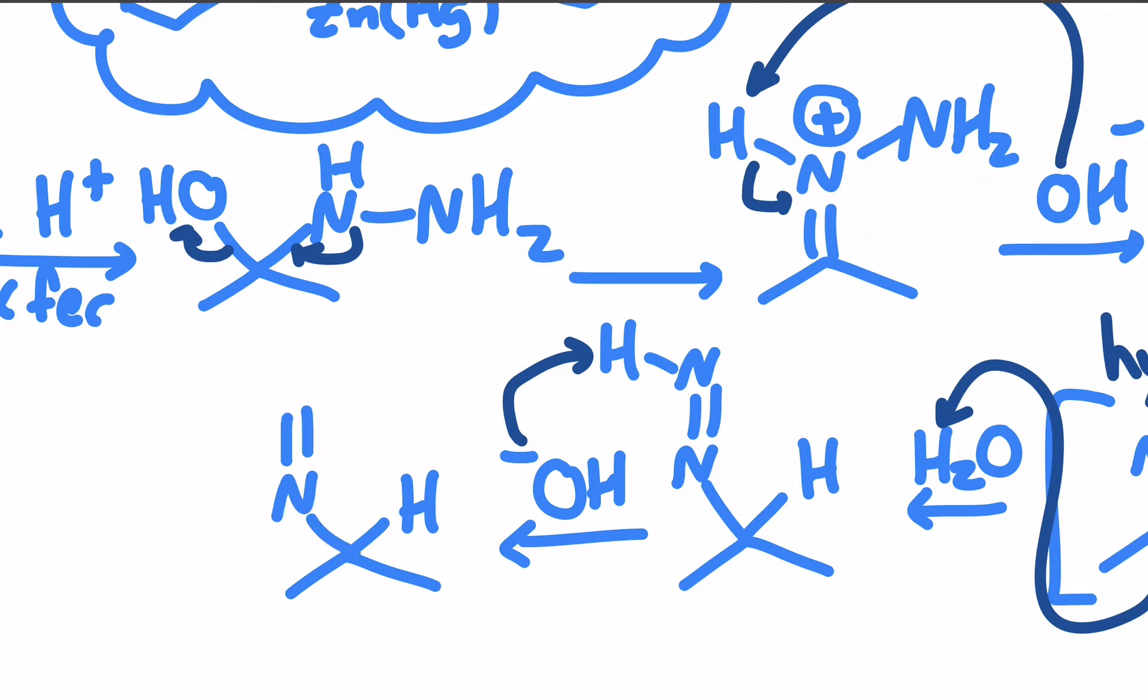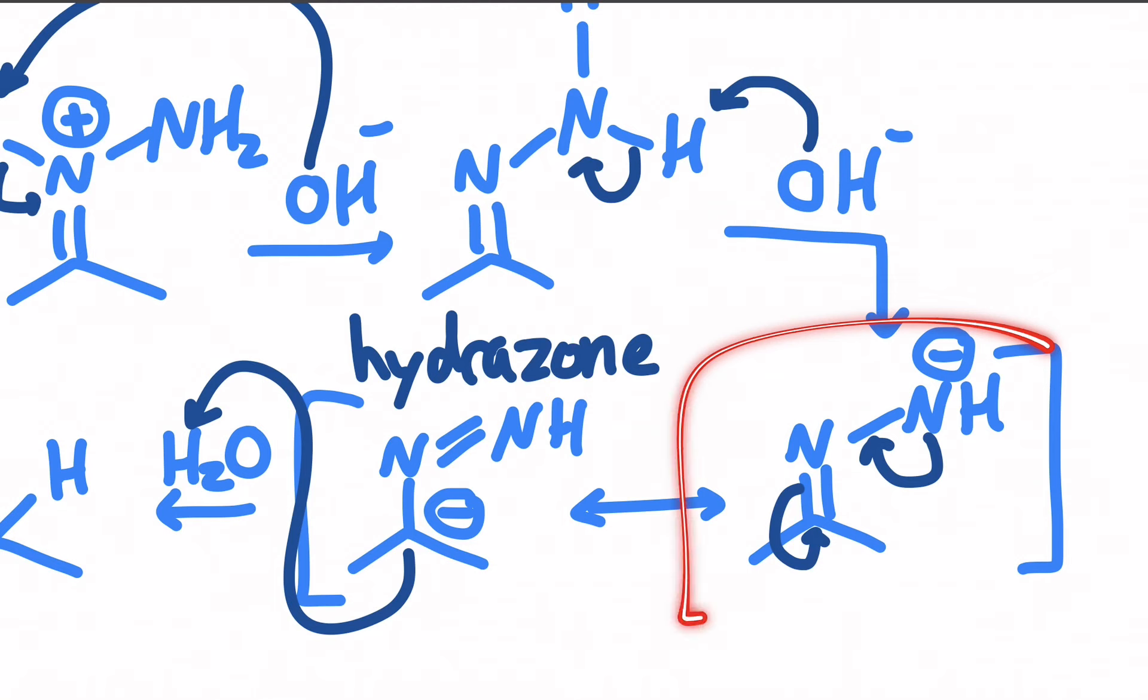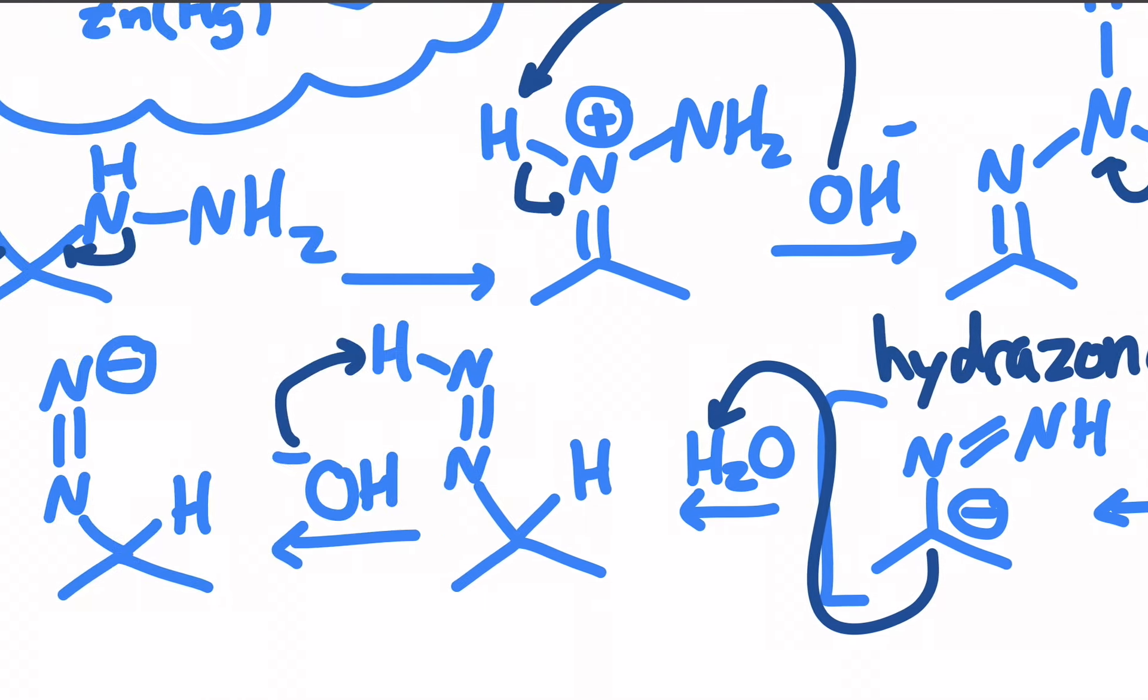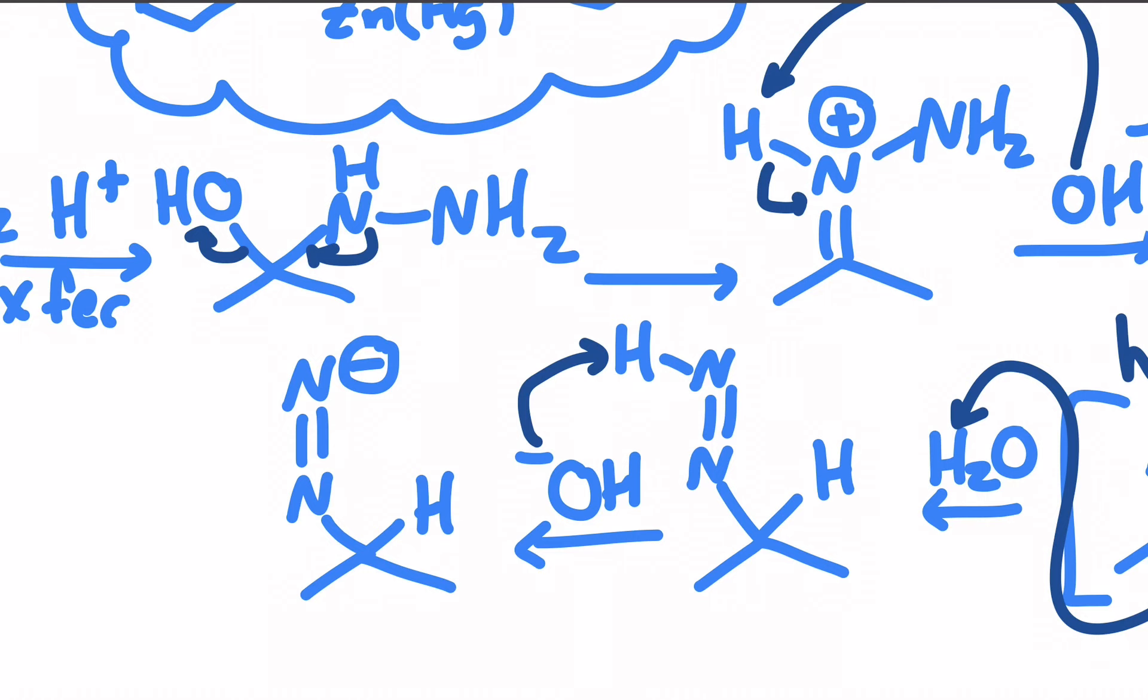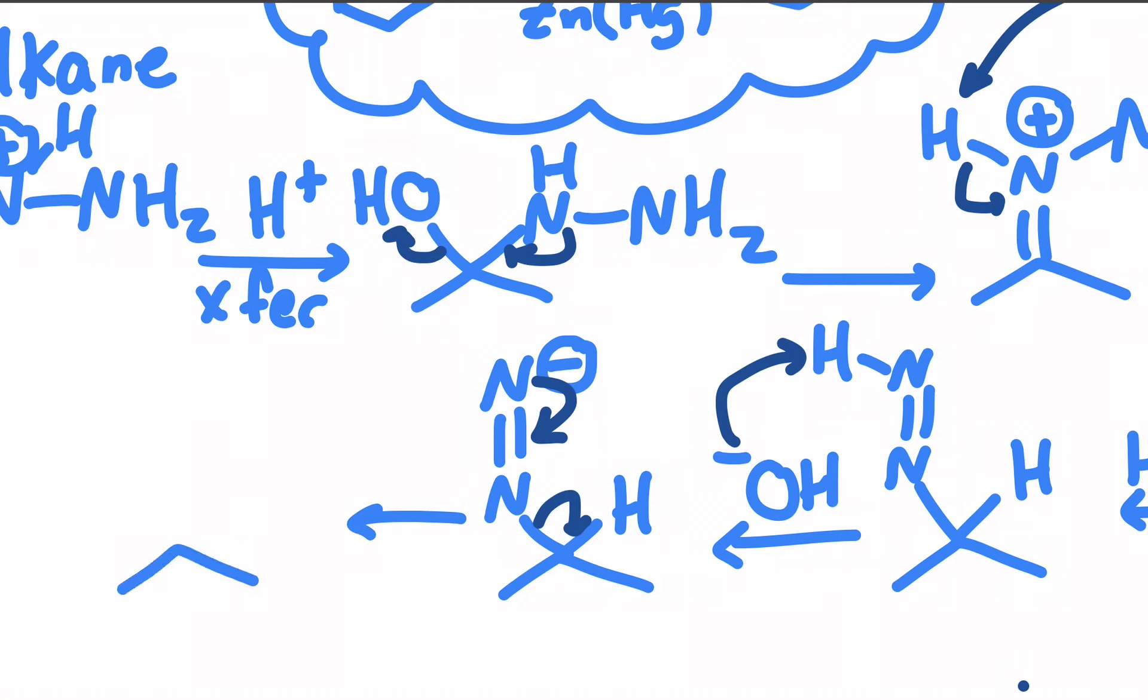And we can even repeat the arrow pushing we saw back here, except this was a resonance contributor - here we're actually going to use that negatively charged nitrogen to form a nitrogen molecule. Remember nitrogen as a molecule is an excellent leaving group, and here it just becomes a very stable gaseous product that will throw a negative charge right on that carbon. And now the nitrogen isn't even attached - it's a triply bonded nitrogen molecule which as you should know is a gas and it's very stable.